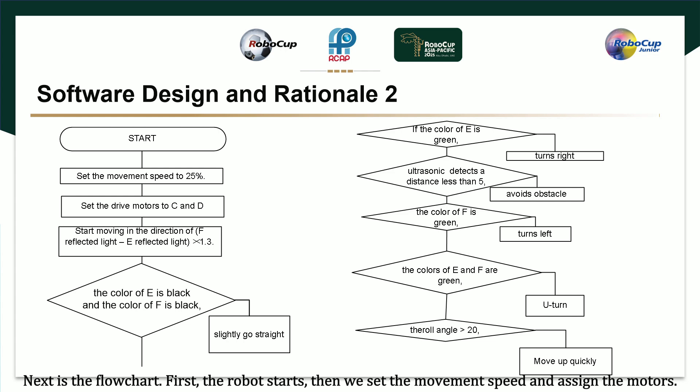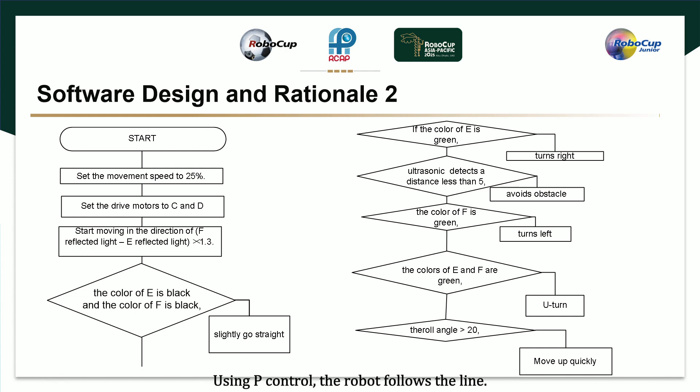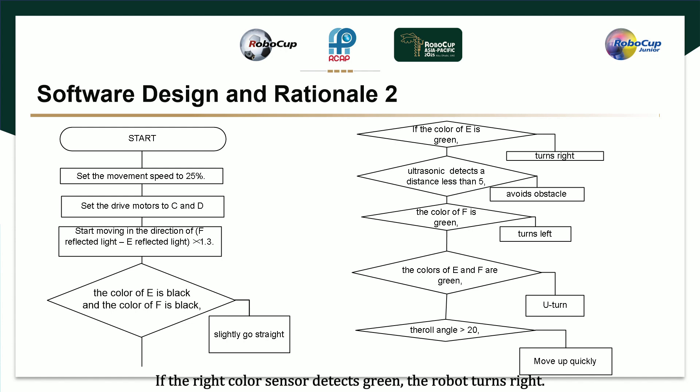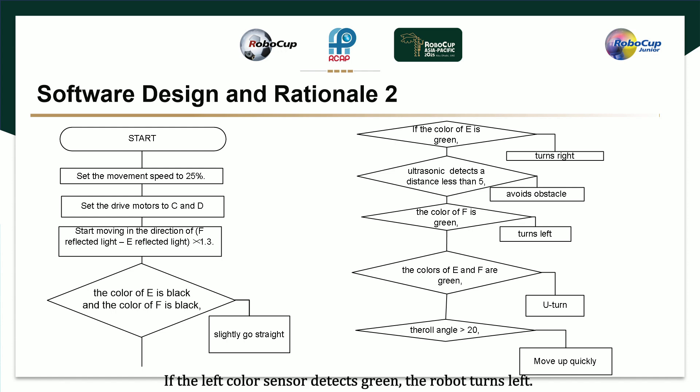Once the robot starts, we set the movement speed and assign the motors. Using P control, the robot follows the line. If both color sensors detect black, the robot goes straight. If the right color sensor detects green, the robot turns right. If an obstacle is detected, it is avoided. If the left color sensor detects green, the robot turns left. If the slope angle is greater than 20 degrees, the speed increases.